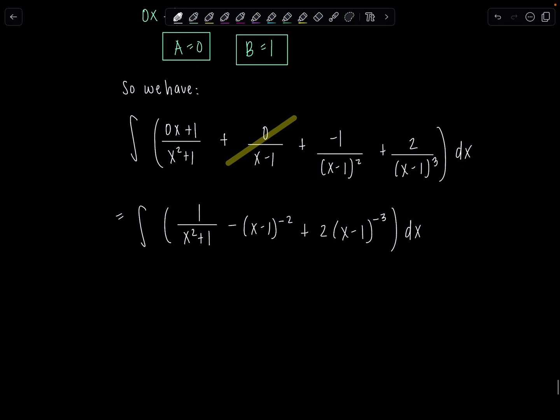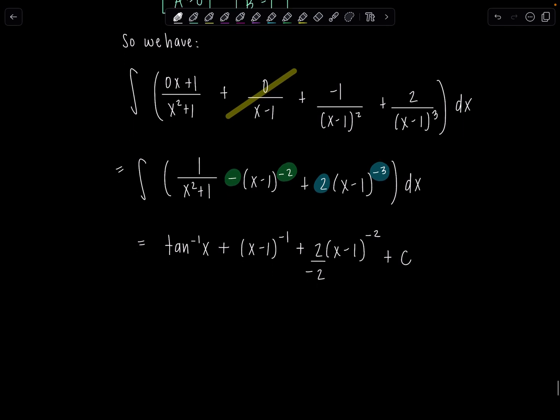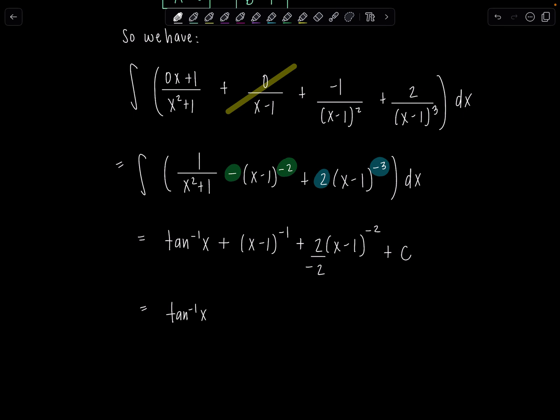Are you ready? I told you this part wasn't bad. Now you're home free. So we've got tan inverse of x minus, now I'm going to add 1 to the exponent and then divide by the new exponent. So if I add 1, my new exponent is negative 1. And then when I divide by negative 1, this becomes positive. Good. And then same thing over here. Add 1 to the exponent, divide by the new exponent. So then you're going to have 2 times x minus 1 to the negative second. And then I'm going to divide by negative 2 plus c.